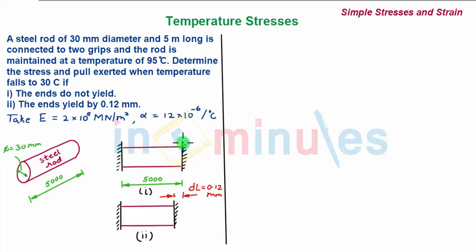This steel rod is held between two grips. Initially the temperature of the steel rod is 95 degrees Celsius. In the problem it has been asked to find out the stress and pull exerted by the steel rod on this clamp when its temperature falls to 30 degrees Celsius.